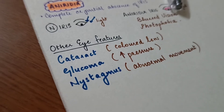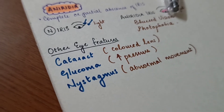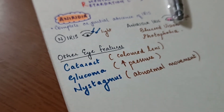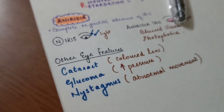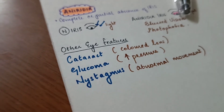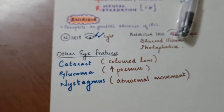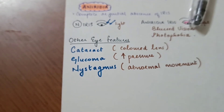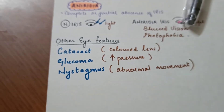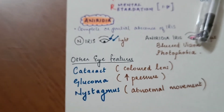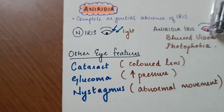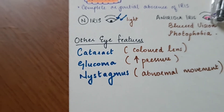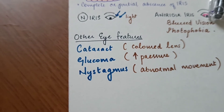Other eye features in WAGR syndrome include cataract — clouding of the lens — glaucoma, which is increased pressure in the eye, and nystagmus, which is abnormal involuntary movement of the eye.